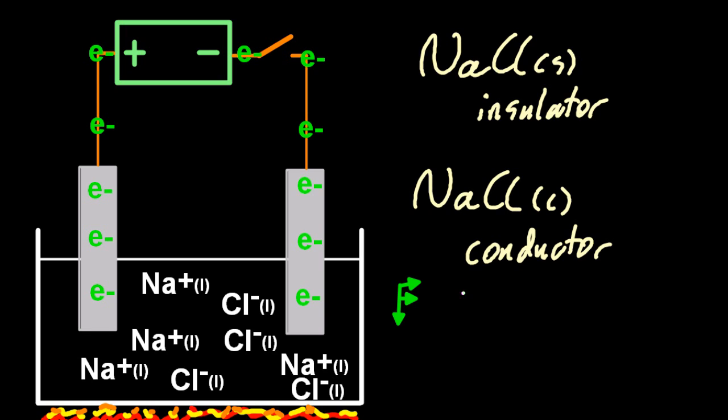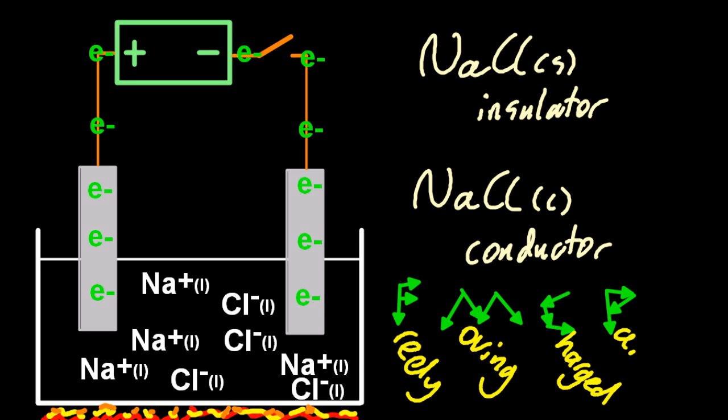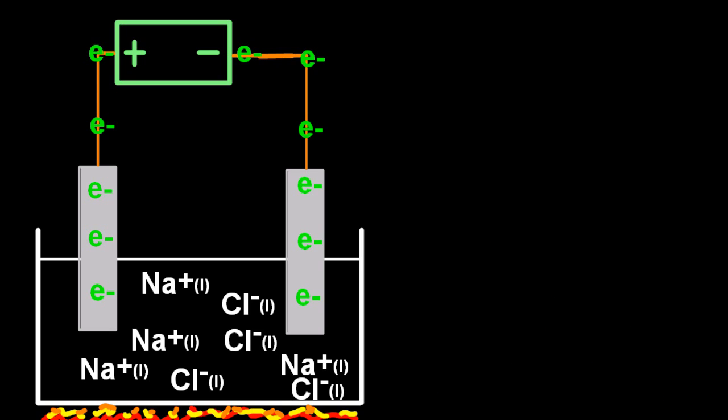And the reason for that, well, I always think FMCP, freely moving charged particles. Anything that conducts electricity has freely moving charged particles. So, of course, when you melt it, you're freeing up these ions to move around. And it becomes a conductor.